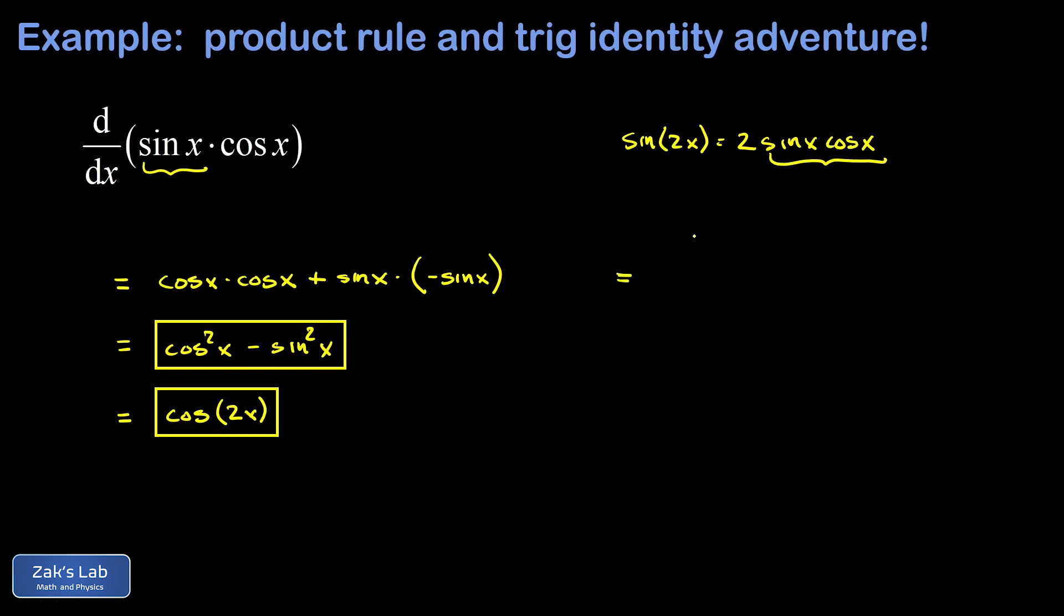So I'm just going to modify the problem before I even take the derivative just as an alternative approach here and sine x times cosine x that's half sine 2x.